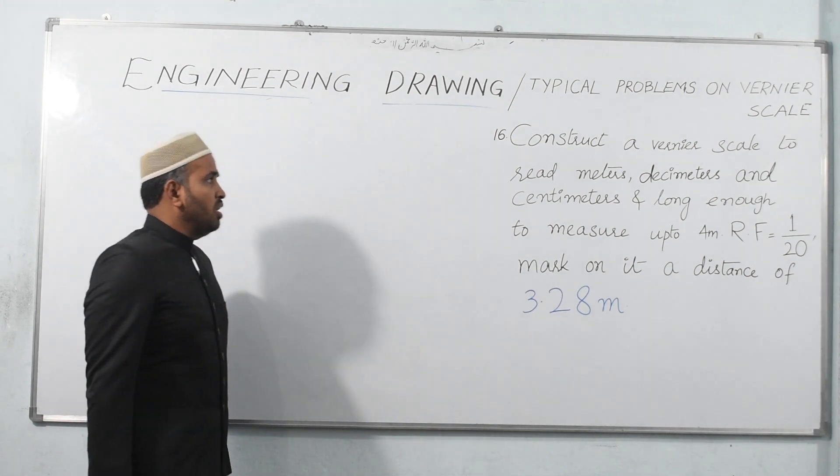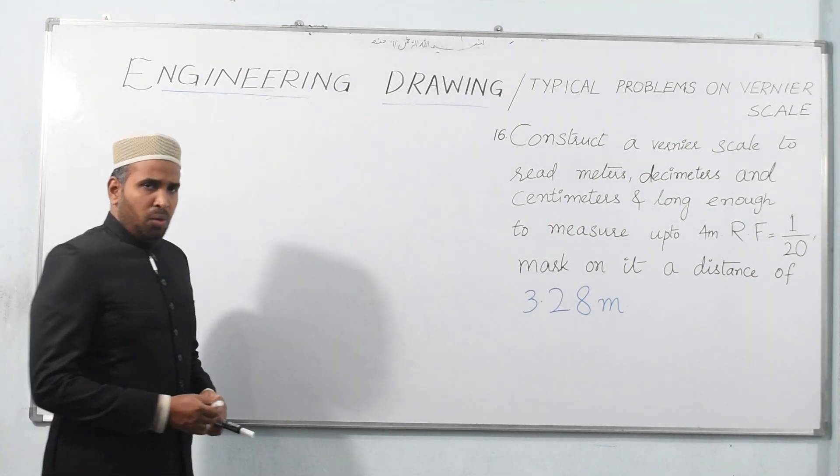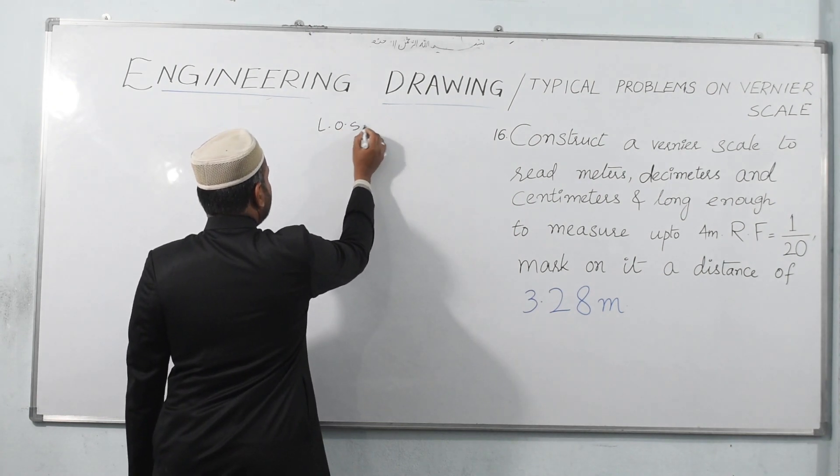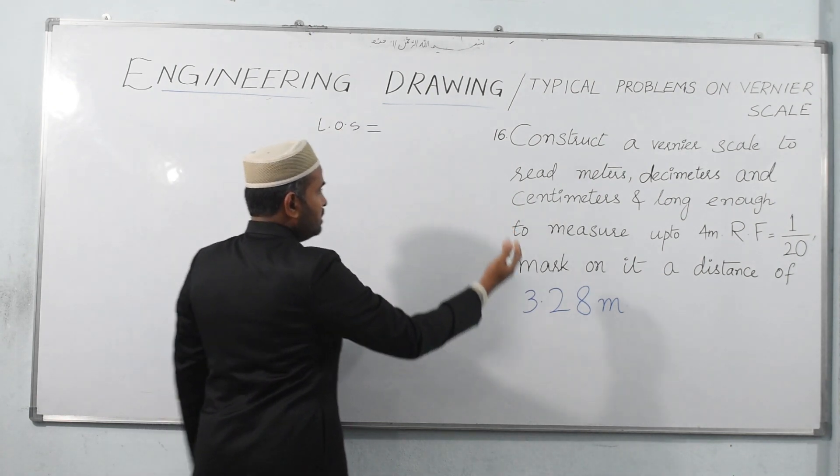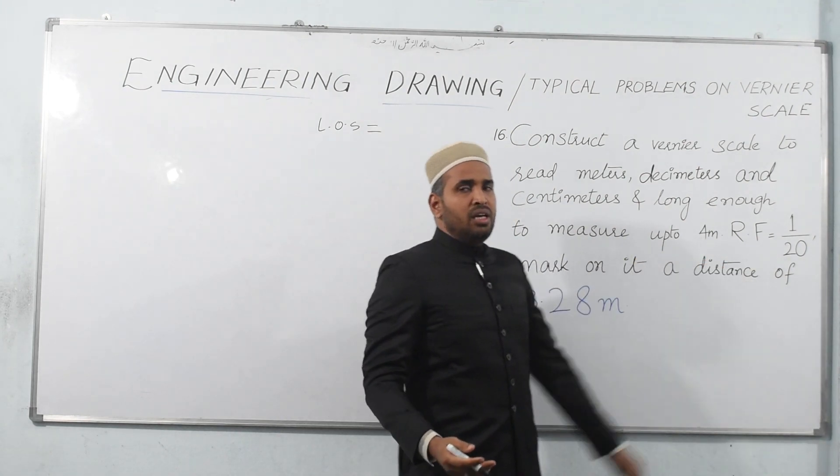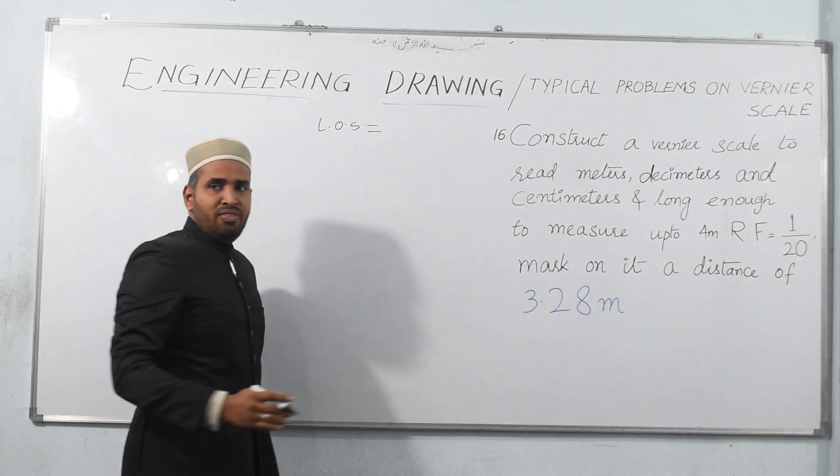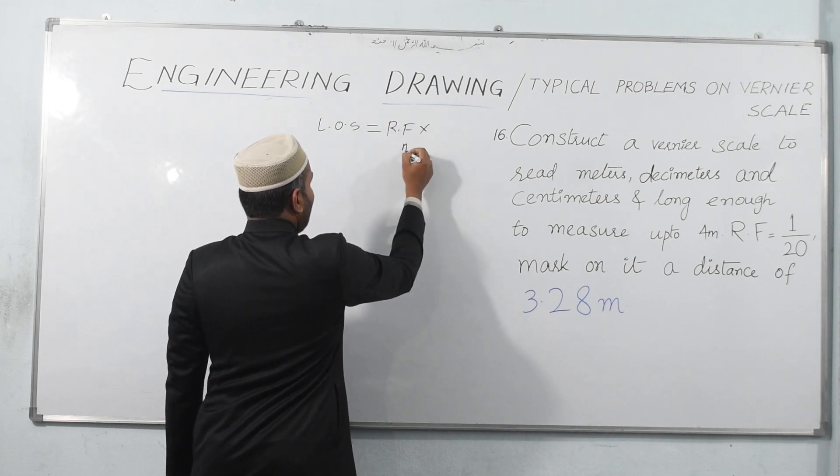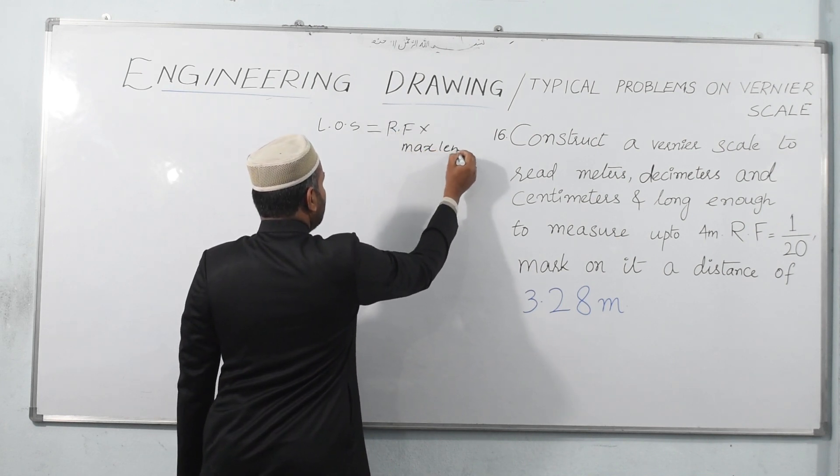Now how to start this problem? The length of the scale, because RF is directly given to me. Length of the scale is equal to RF times maximum length to be measured.